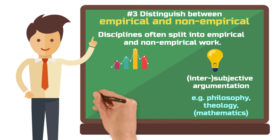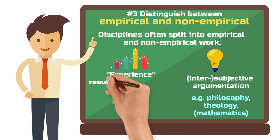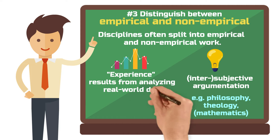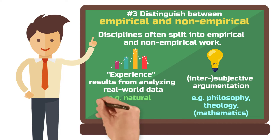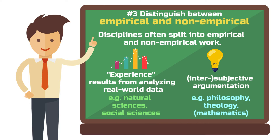Empirical research seeks to gain knowledge through experience, which is achieved by systematically collecting and analyzing data from the real world. Originally, the role model for empirical research were the hard sciences, meaning the natural sciences such as physics or chemistry. However, many social sciences adopted the same approach and tried to objectively measure all things related to social phenomena. But over the last 50 years or so, many social sciences have also been influenced by the humanities, which bring in non-empirical or more subjective ways of collecting and analyzing data.